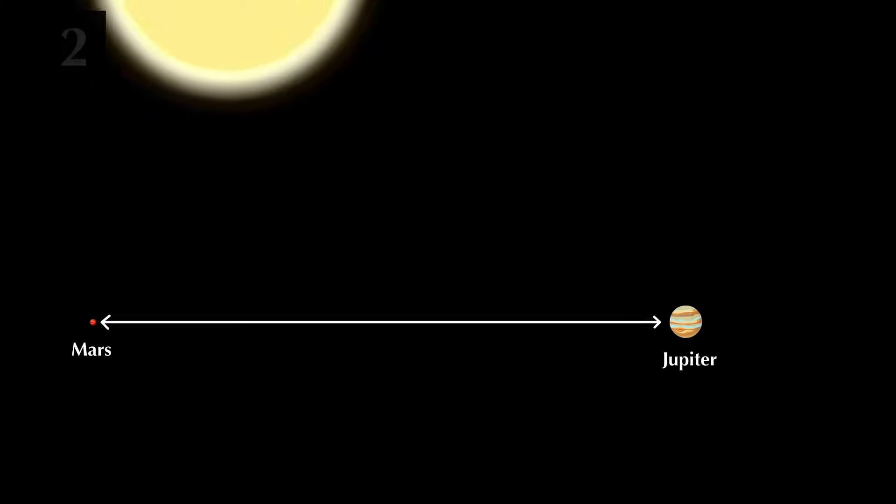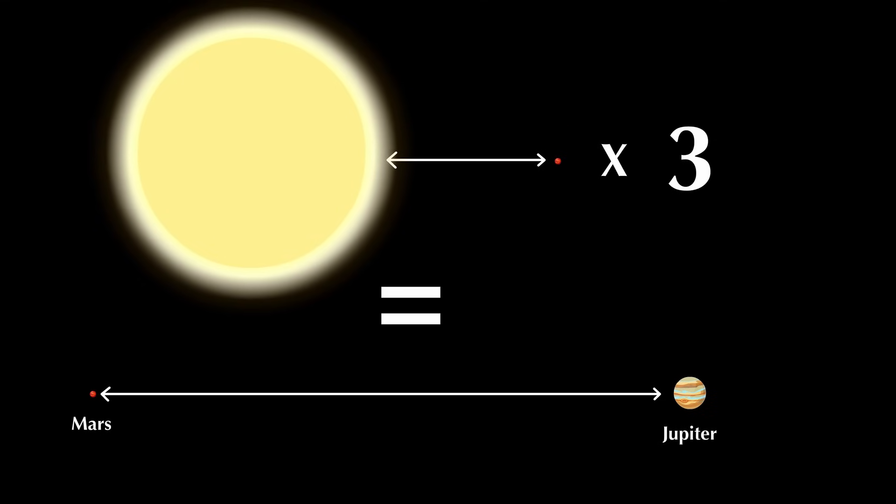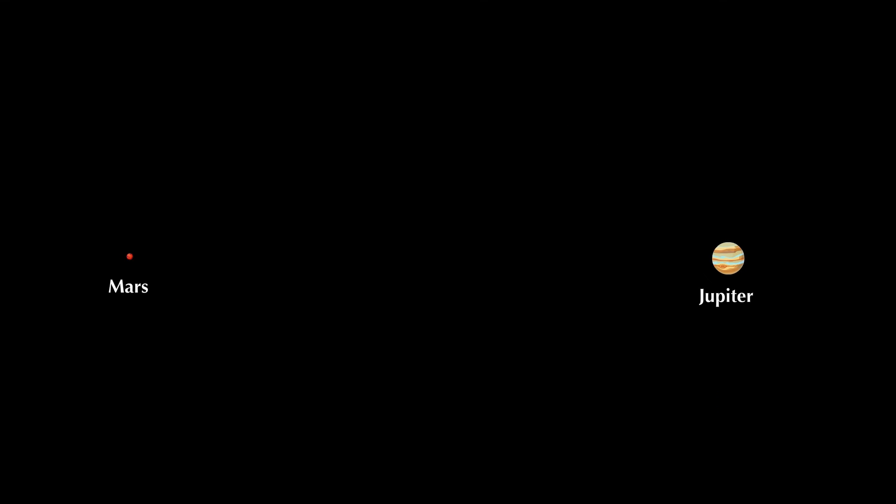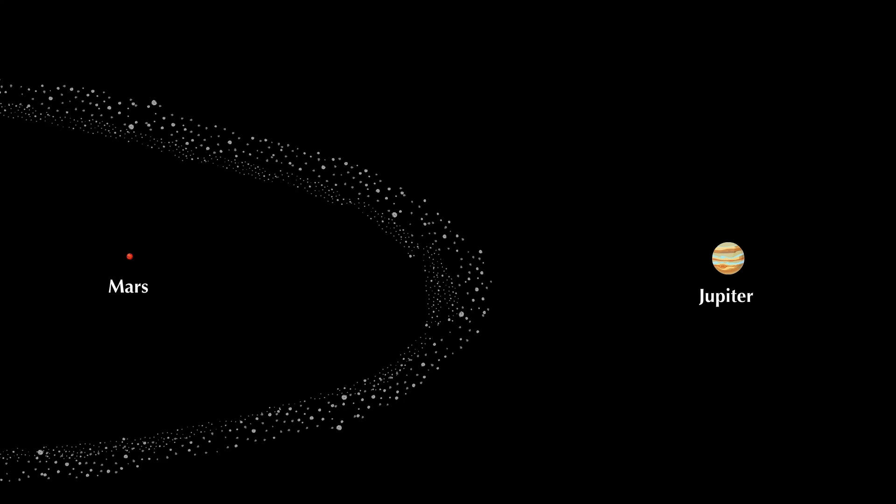The inner planets are basically the size of a period, in comparison to an A4 notebook paper-sized sun. The journey from Mars to Jupiter is three times as long as the journey from the sun to Mars. Sure, it has an asteroid belt in between, but that isn't as packed with asteroids as you may think.